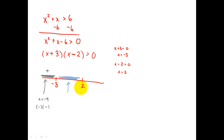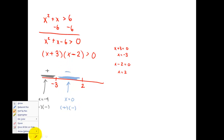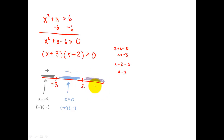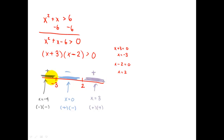Now the blue region: choose a number between negative three and two. Zero is in there — I love using zero because it's the easiest. Zero plus three is three, a positive number. Zero minus two is negative two, a negative number. A positive times a negative is a negative — so that region is negative. Now the purple region: choose a number bigger than two, like three. Three plus three is positive, and three minus two is also positive. A positive times a positive is a positive. So I've made my sign chart — again, it switches signs everywhere, but don't assume that always happens. I get plus, minus, plus.